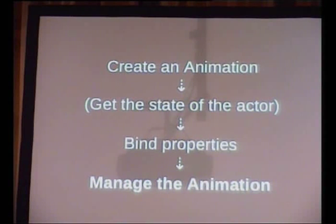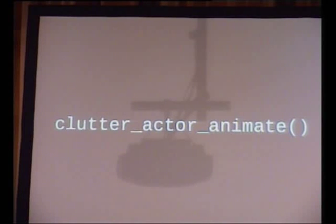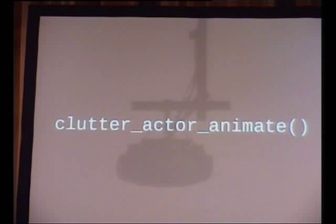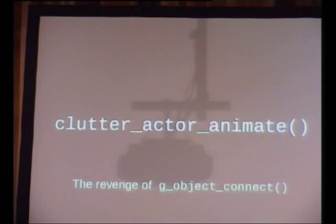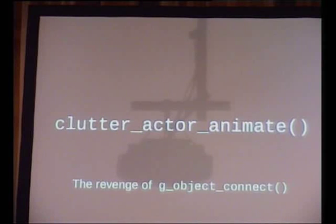What you have to do is create an animation, get the state of the actor, take its properties, bind them to the interval, and then manage the animation lifetime in terms of memory management. This process can be completely abstracted by one function: clutter_actor_animate. It's a variadic argument function — C only — all out magic, and it manages the memory for most objects by itself. The complexity it hides is its great strength and also its biggest weakness — you don't really know what's going on. But you can decompose the function and use the basic implementation.